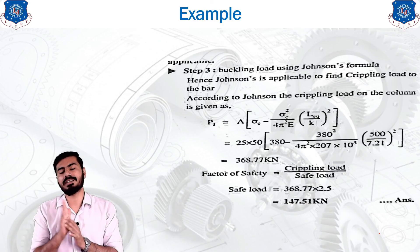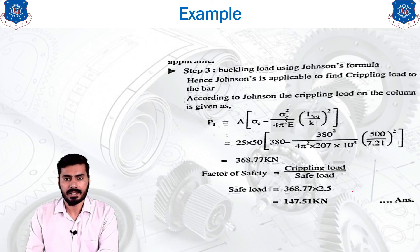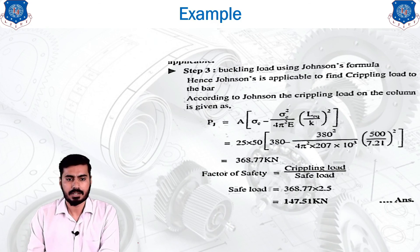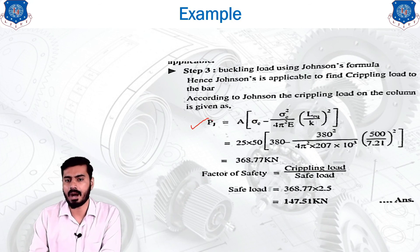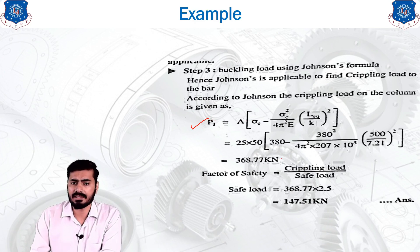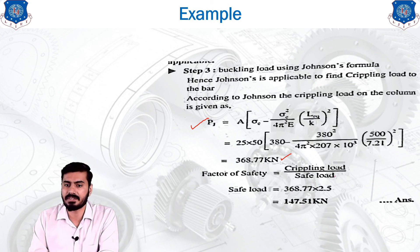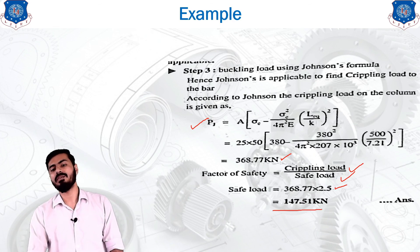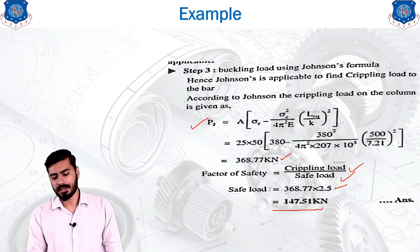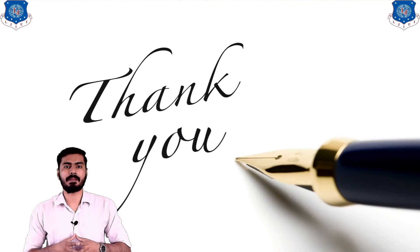Since the slenderness ratio (69.28) is less than the threshold value (73.32), Euler's formula is not applicable — the beam is considered a short column. We therefore use Johnson's formula. Applying the Johnson's equation, solving for sigma_c and computing P_J gives 368.77 kilonewton. With a factor of safety of 2.5, the safe compressive load the column can carry is 147.51 kilonewton. This concludes the lecture on beams and columns.